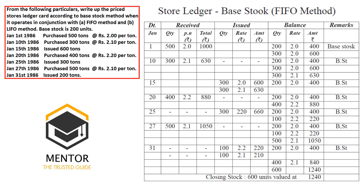Every time we keep certain material as base stock as per the instruction given in the question. The total quantity left over is 600 units including base stock, valued at 1240 rupees. So the closing stock is 600 units valued at 1240 rupees. This is the simple way of doing the Base Stock Method.